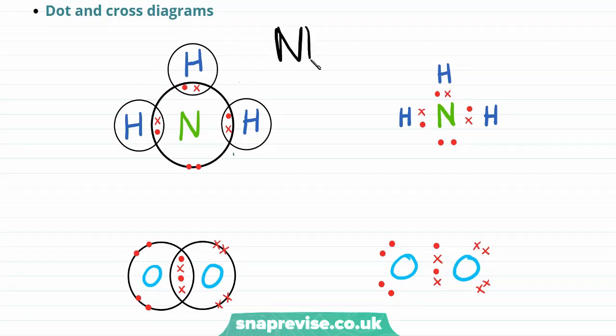On the left here, you can see a full dot and cross diagram for ammonia, or NH3. In this example, the electrons that originate from the nitrogen atom have been drawn as dots, and electrons originating from hydrogen atoms have been drawn as crosses.